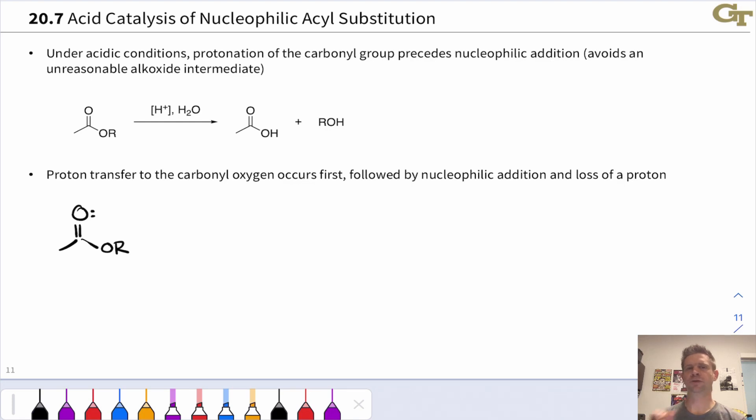In the mechanism we just looked at, the nucleophile was anionic and kicked off an anionic leaving group. But nucleophilic acyl substitution can also occur under acidic conditions, and here the nucleophilic addition and beta elimination steps are catalyzed by acid using a mechanistic pattern that we've seen before.